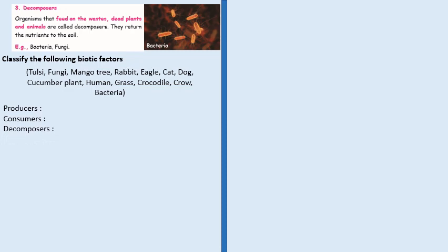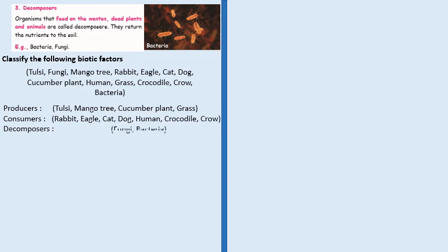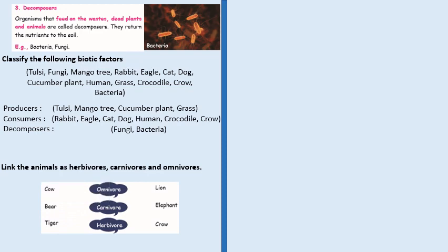Classify the following biotic factors as producers, consumers and decomposers. Tulsi, mango tree, cucumber, plant and grass are producers. Rabbit, eagle, cat, dog, human, crocodile, crow are consumers. Fungi and bacteria are decomposers. Now link the animals to say whether they are herbivores, carnivores or omnivores. Cow is herbivore. Lion is carnivore. Bear is omnivore. Elephant is herbivore. Tiger is carnivore. Crow is omnivore.